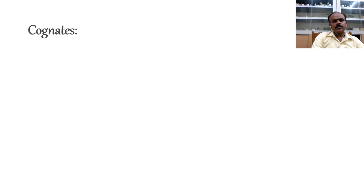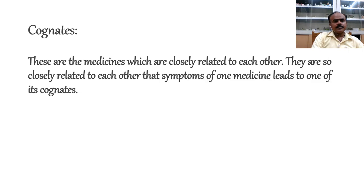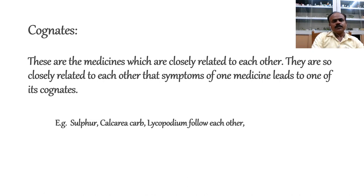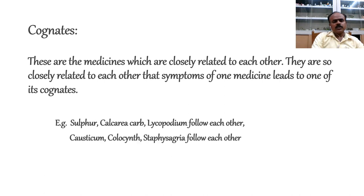Cognates are medicines closely related to each other, so closely related that the symptoms of one medicine lead to one of its cognates. For example, Sulphur–Calcarea Carb–Lycopodium follow each other; Causticum–Colocynthis–Staphysagria follow each other. Collateral remedies are remedies belonging to the same or allied botanical family or chemical group. Similarity frequently exists because of common derivation, whether between plant remedies of similar or closely allied groups, between plants and minerals, or between chemicals having similar or related formulas.